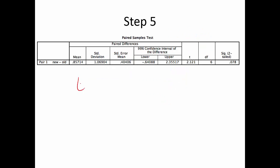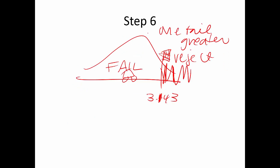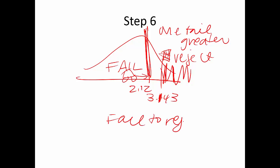Step five: find T-found, or T-actual. It's listed under T in the SPSS output, and I got 2.12. Our T-found of 2.12 didn't reach the critical value of 3.143, so we fail to reject the null — we did not get far enough to say the ratings are statistically greater.